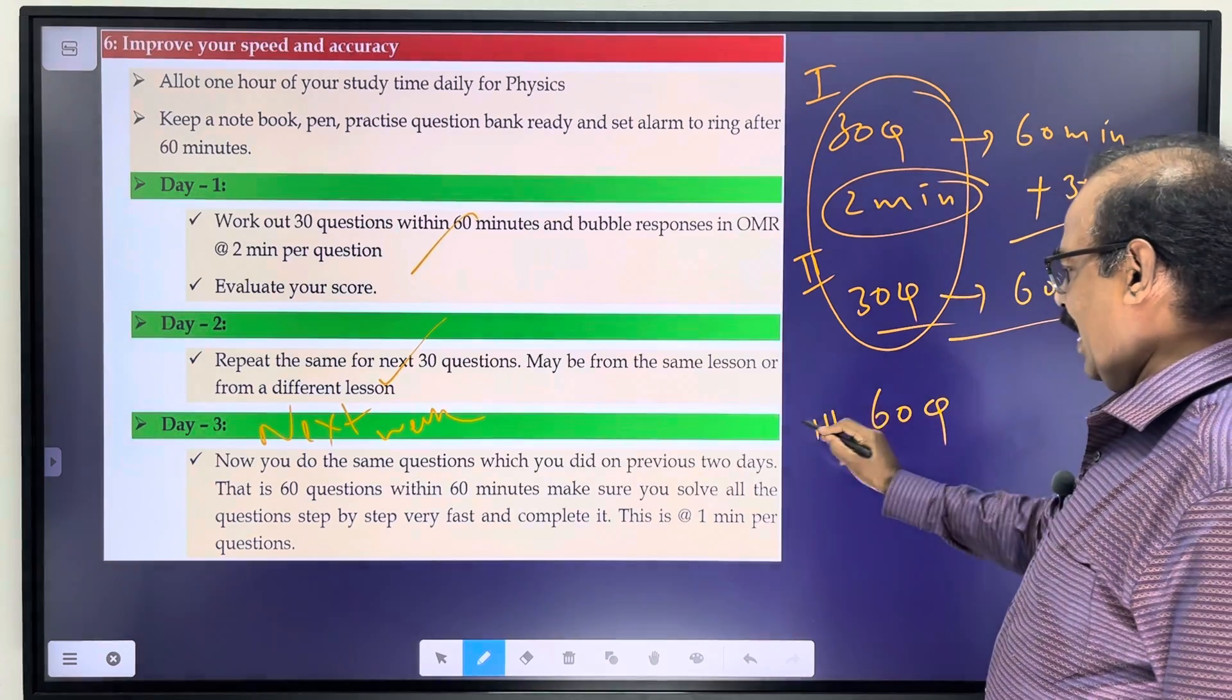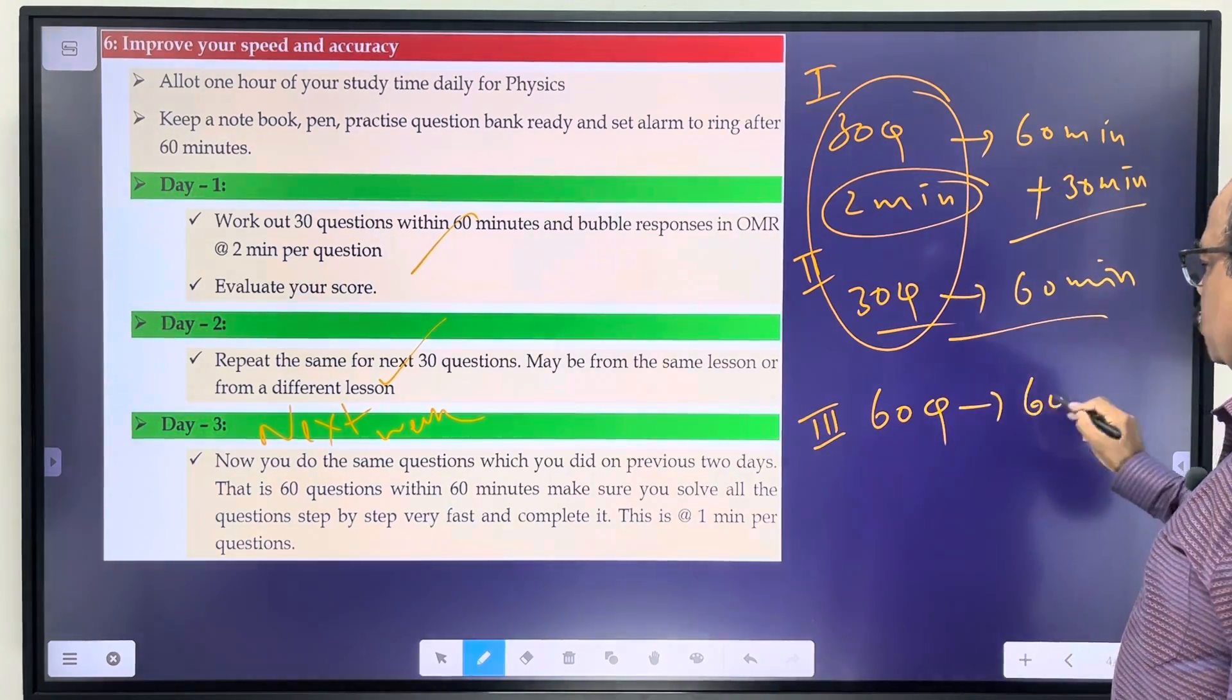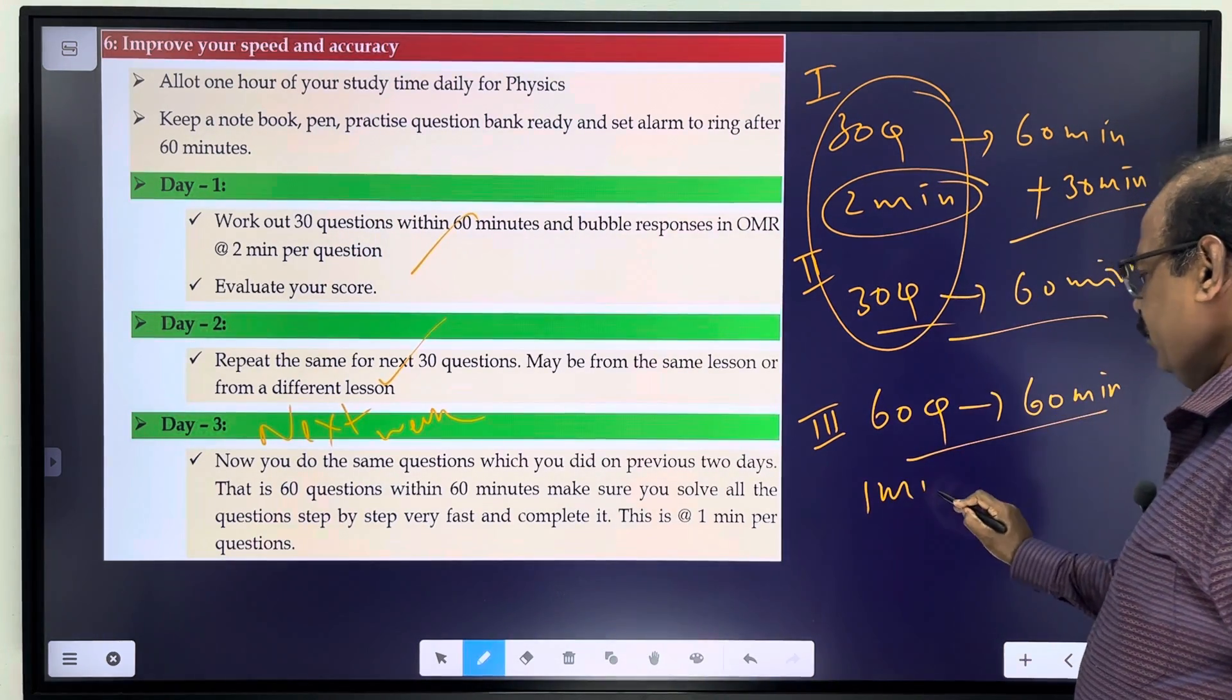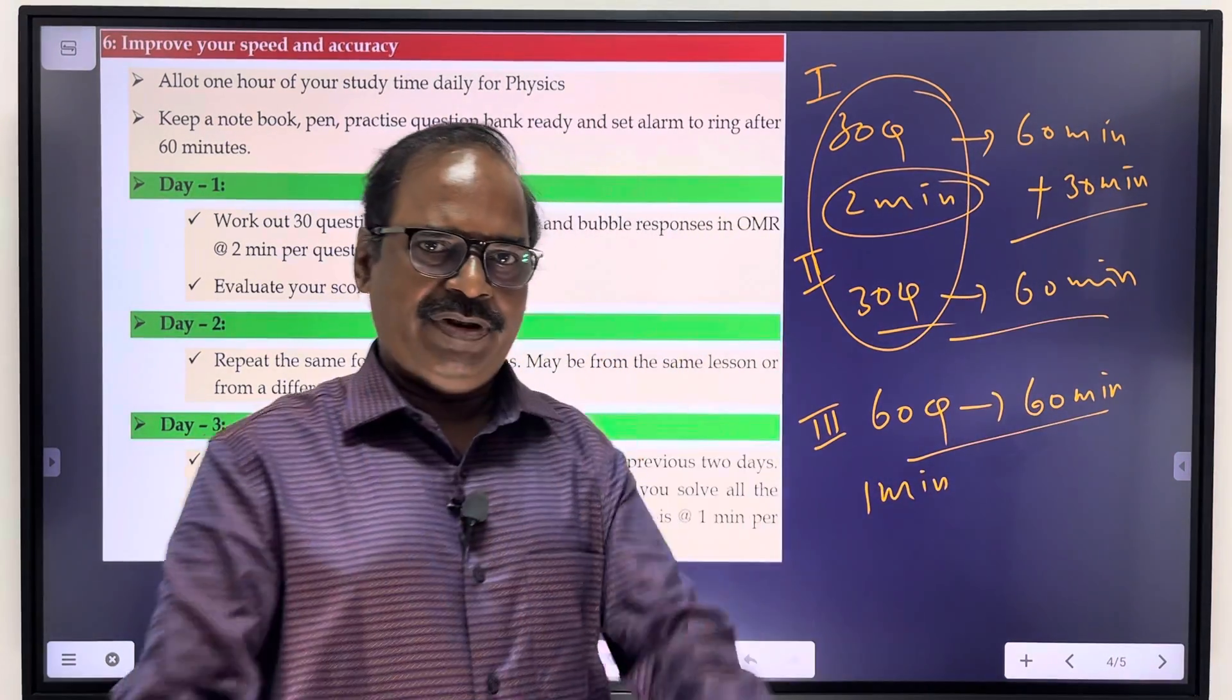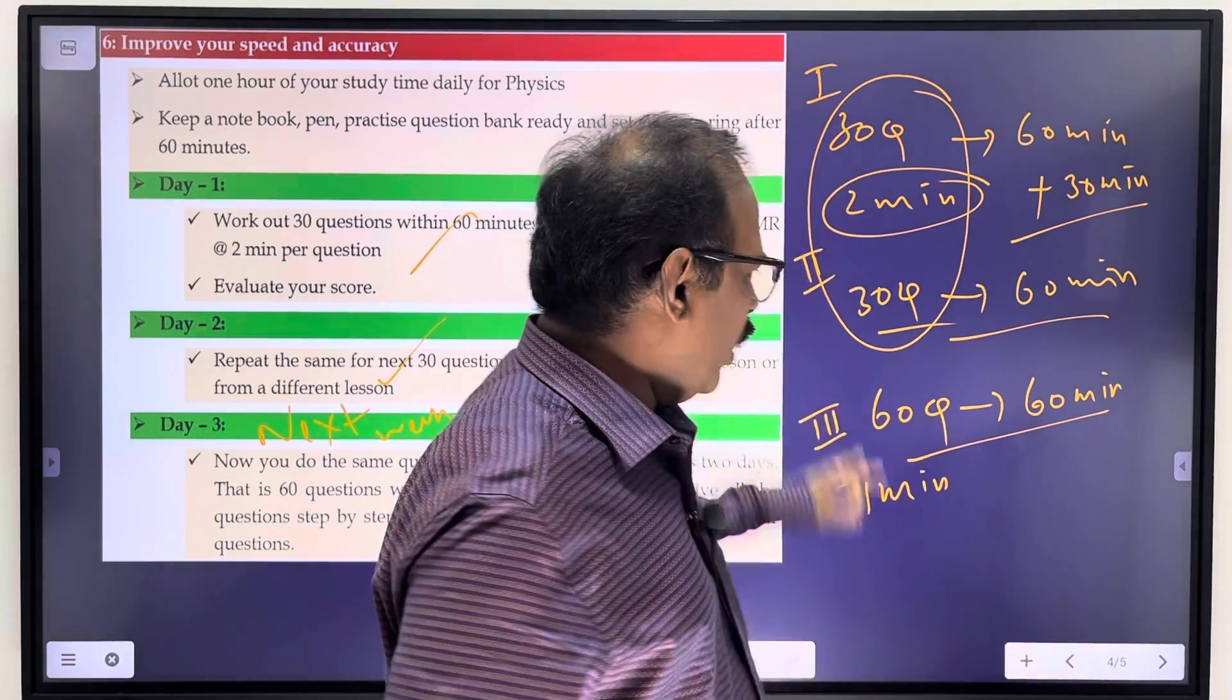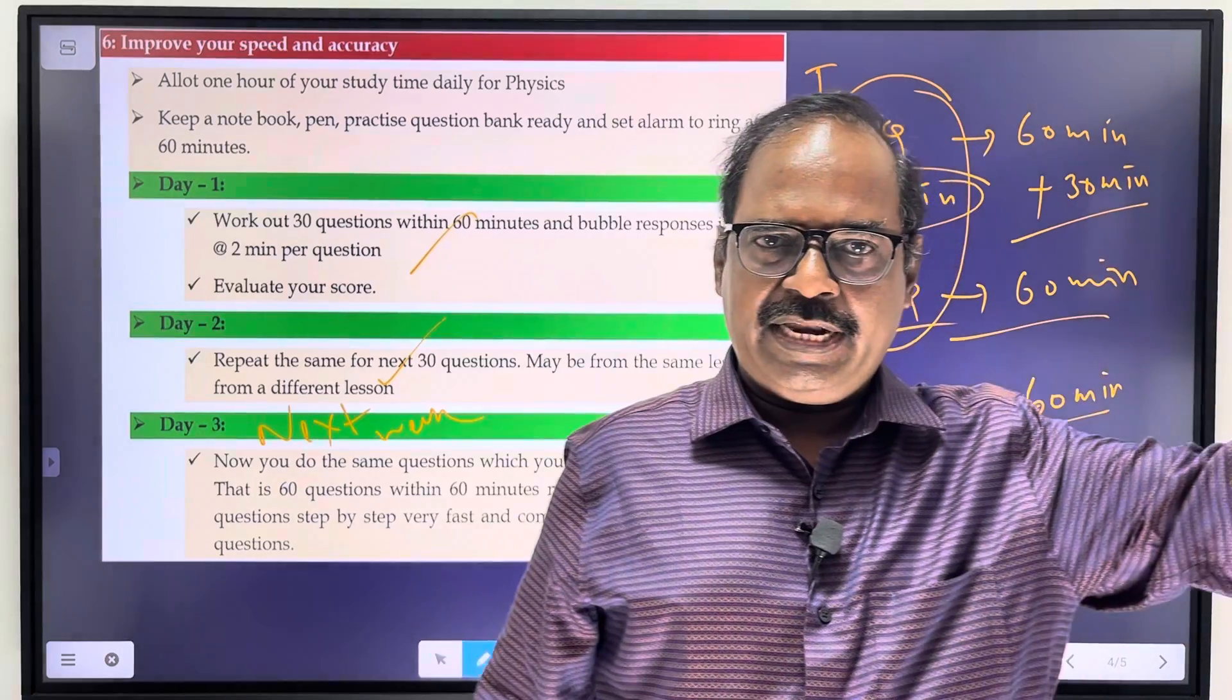That is the same 30 plus 30, 60 questions now, 60 minutes only. Terrific speed - one minute, one question. Solve all the questions and then evaluate your answer, how much is correct. Accuracy is important, speed is also important.